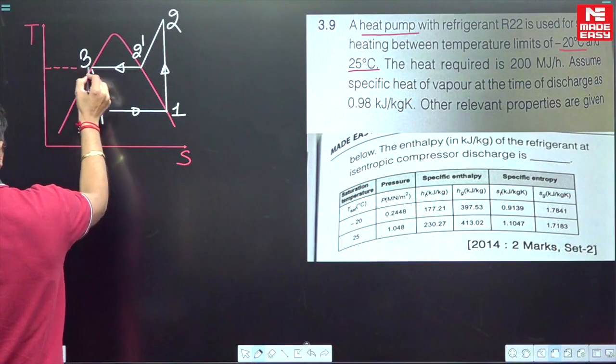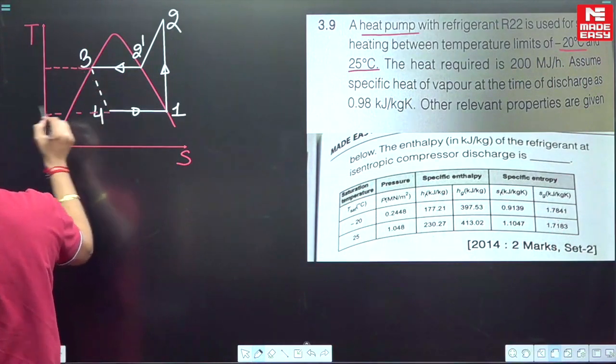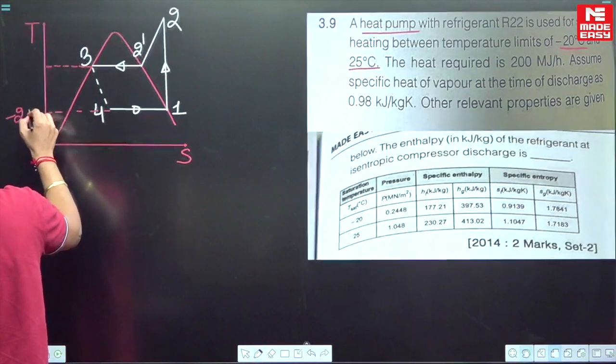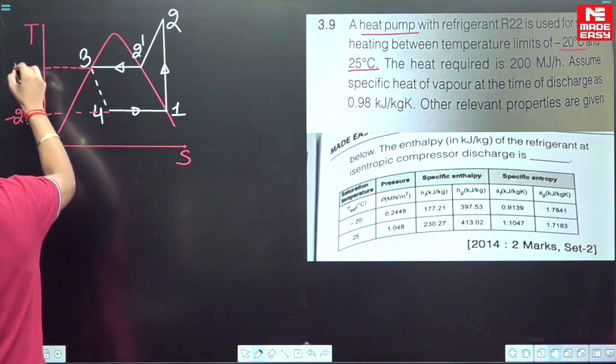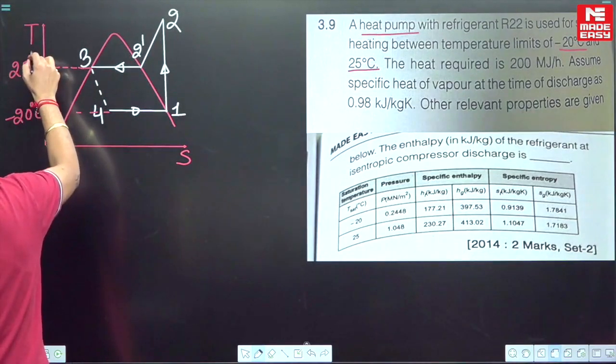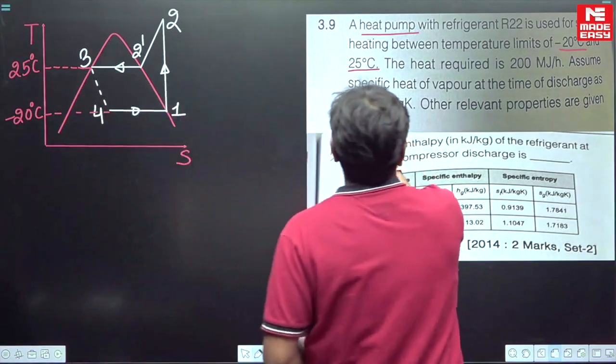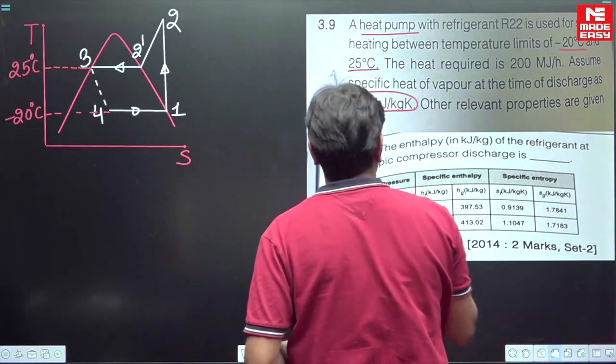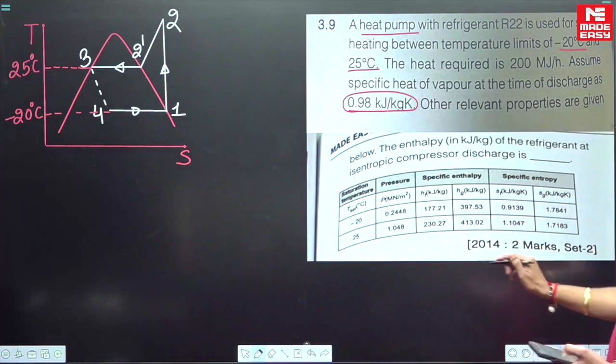So this is minus 20 degrees Celsius and this is 25 degrees Celsius. The specific heat is given and this is a table given: HF, HG, SF, SG, the values are given.